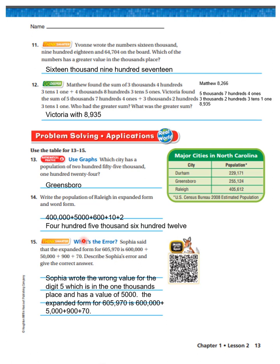What's the error? Sophia said the expanded form of six hundred five thousand nine hundred and seventy is 600,000 plus 50,000 plus 900 plus 70. Sophia's error is that she wrote the wrong value for the digit five — the five is in the thousands place, so its value is five thousand. The correct expanded form is 600,000 plus 5,000 plus 900 plus 70.